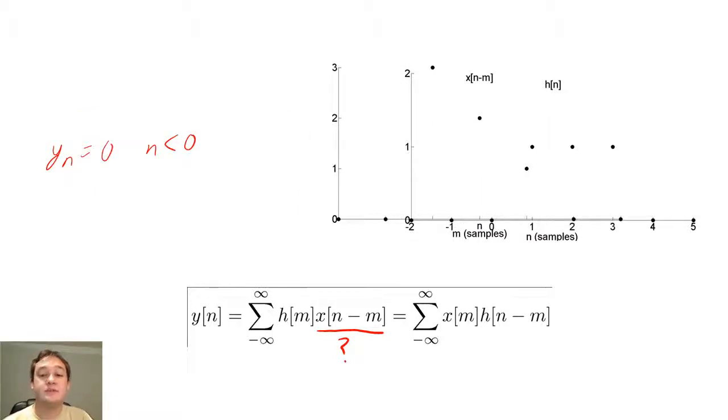When n is 0, the sample of x of n minus 1 is multiplied by the 1 sample of h of m. So y of 0 will be 1.